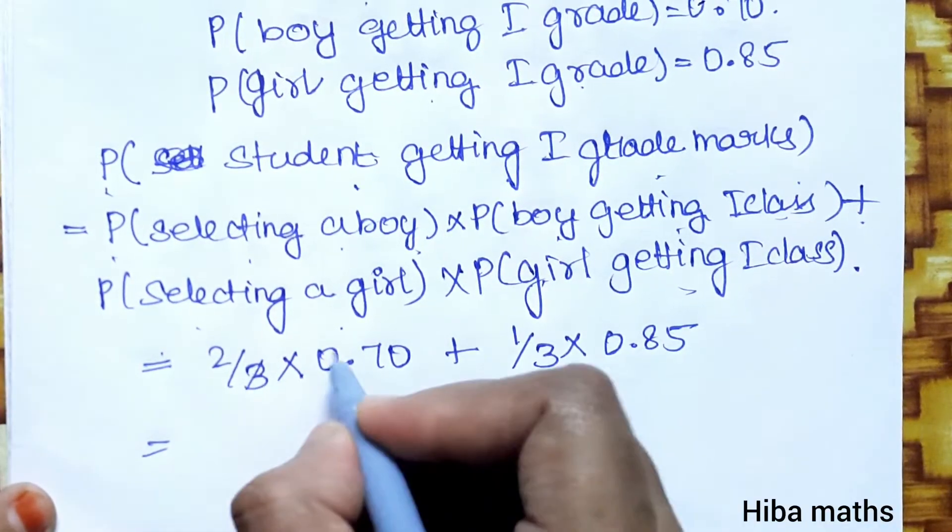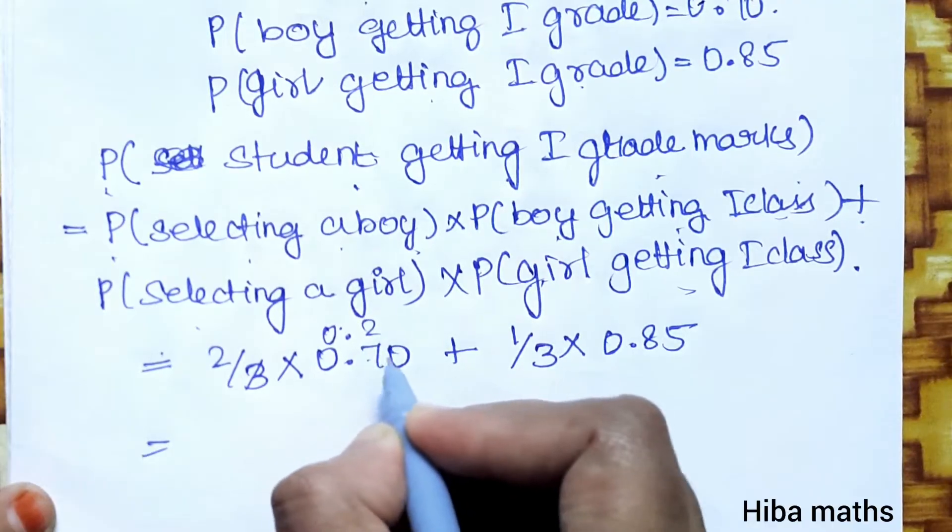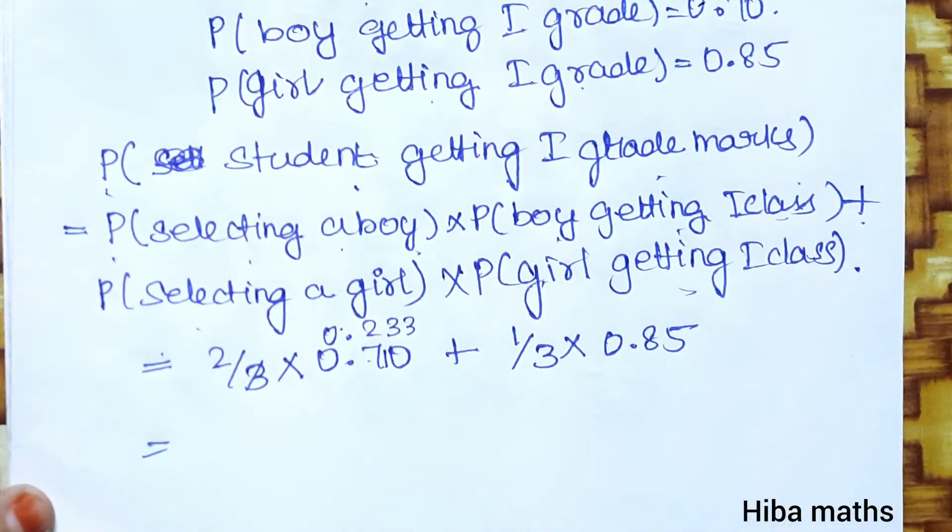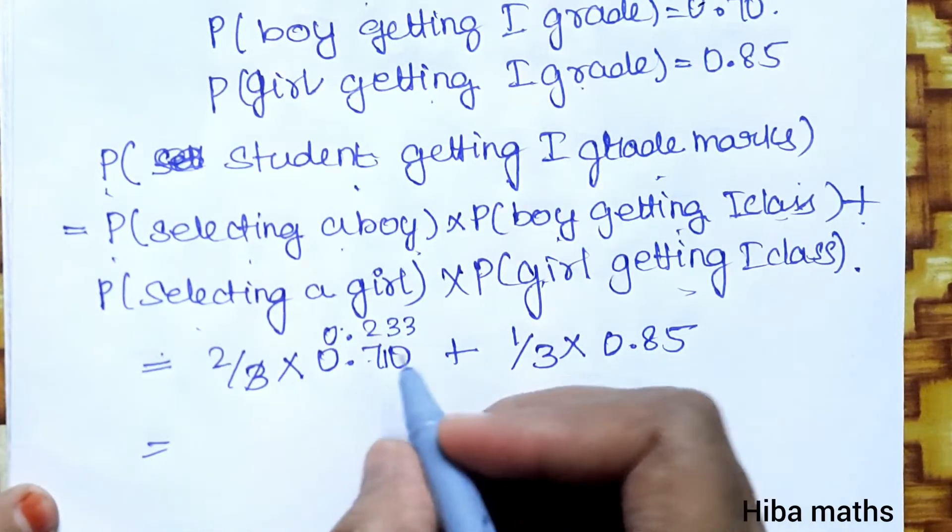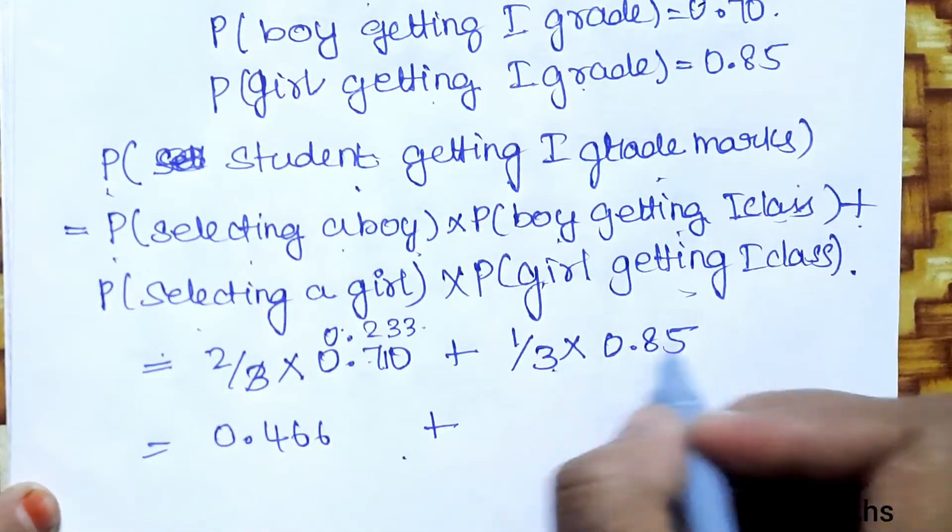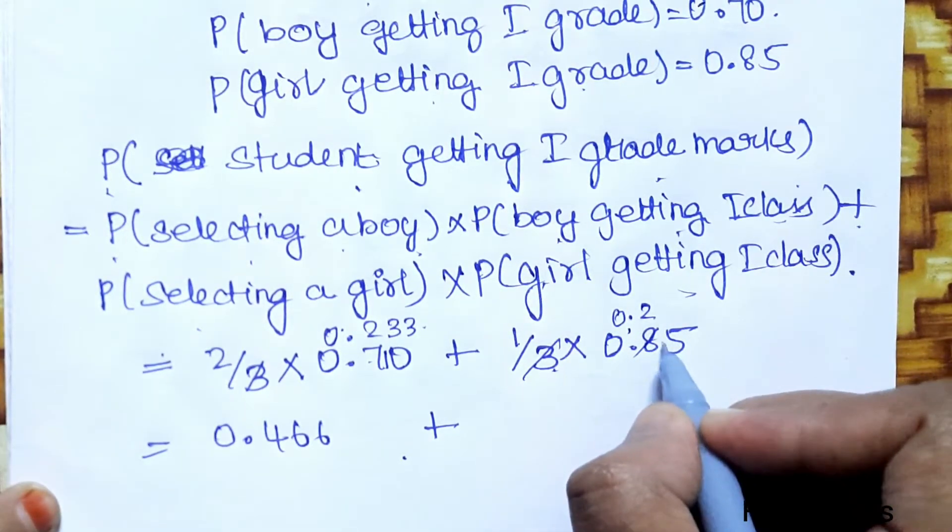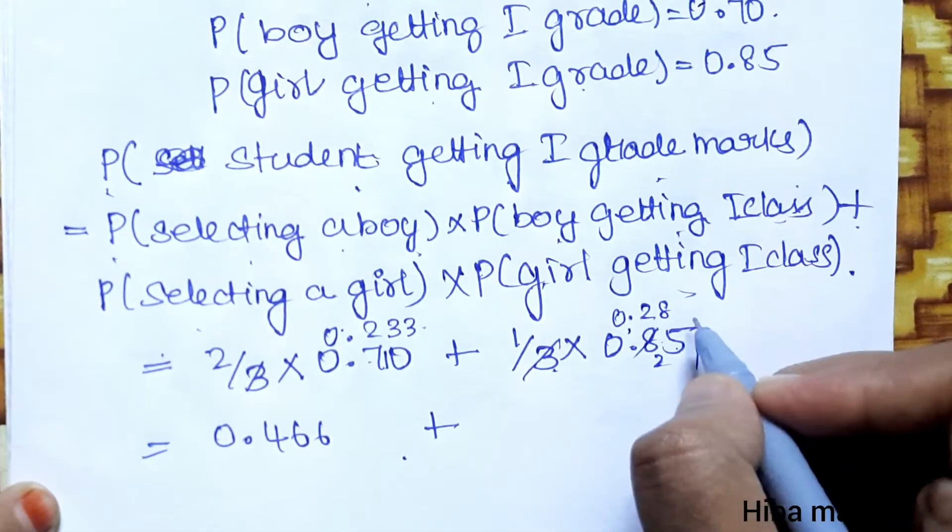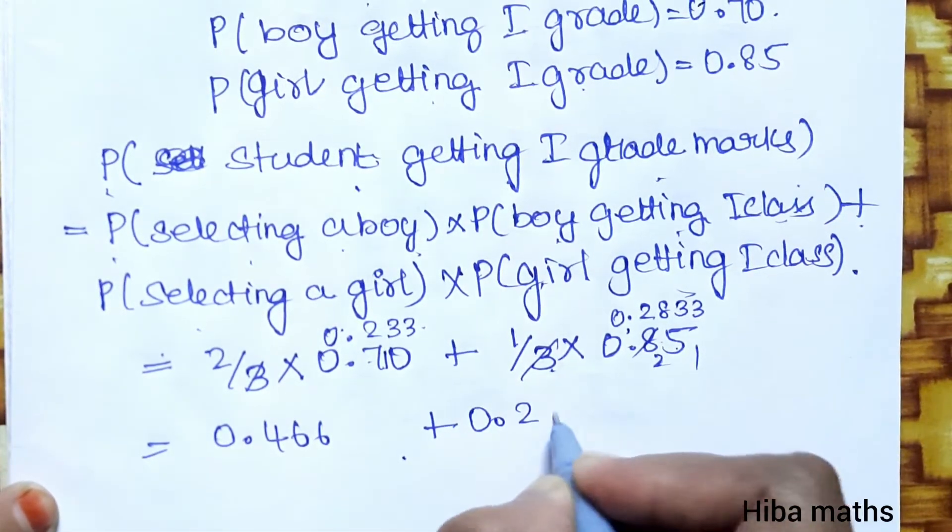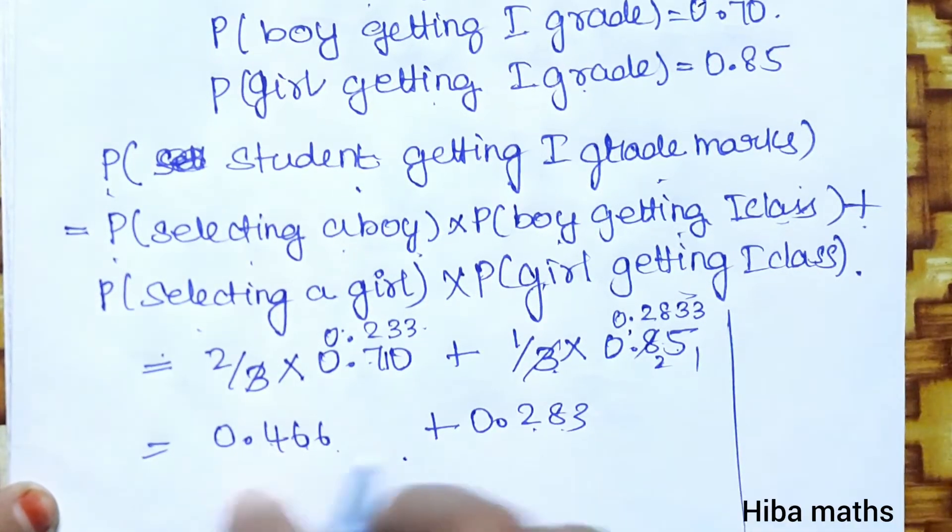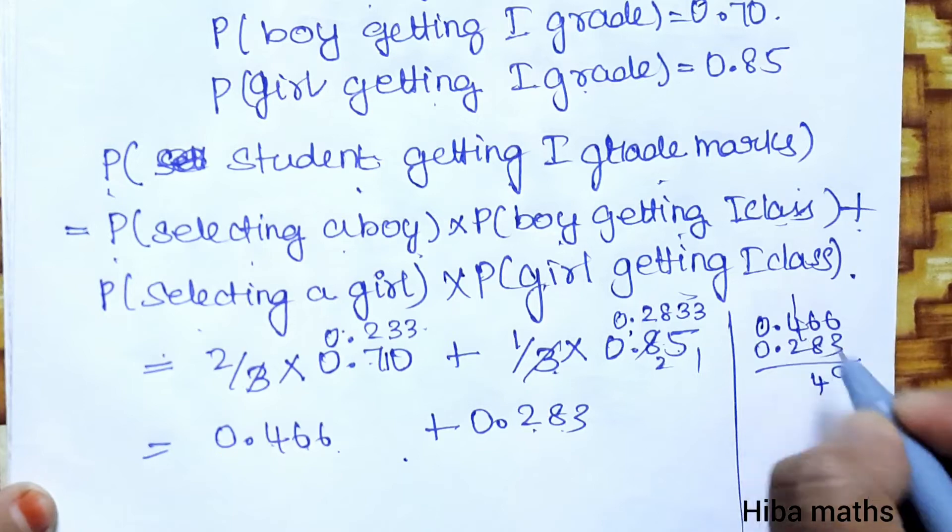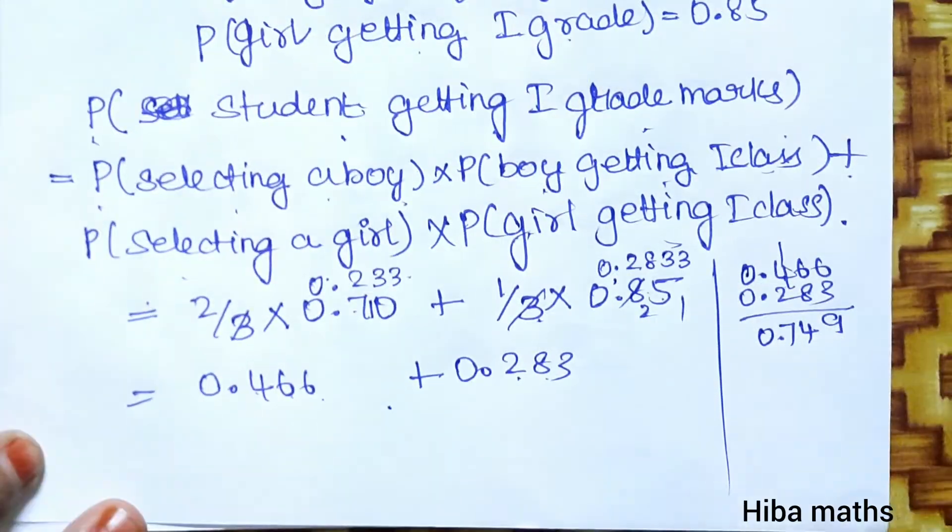Solving this: 2/3 times 0.70 equals 0.466, and 1/3 times 0.85 equals 0.283. Adding these together: 0.466 plus 0.283 equals 0.749.